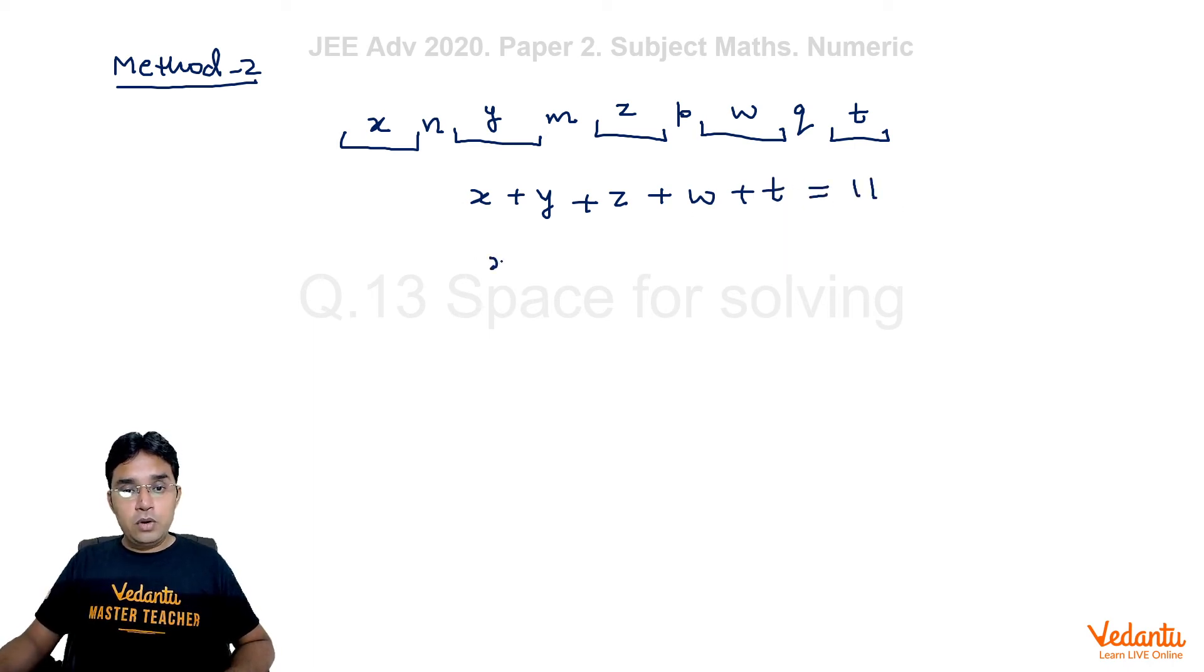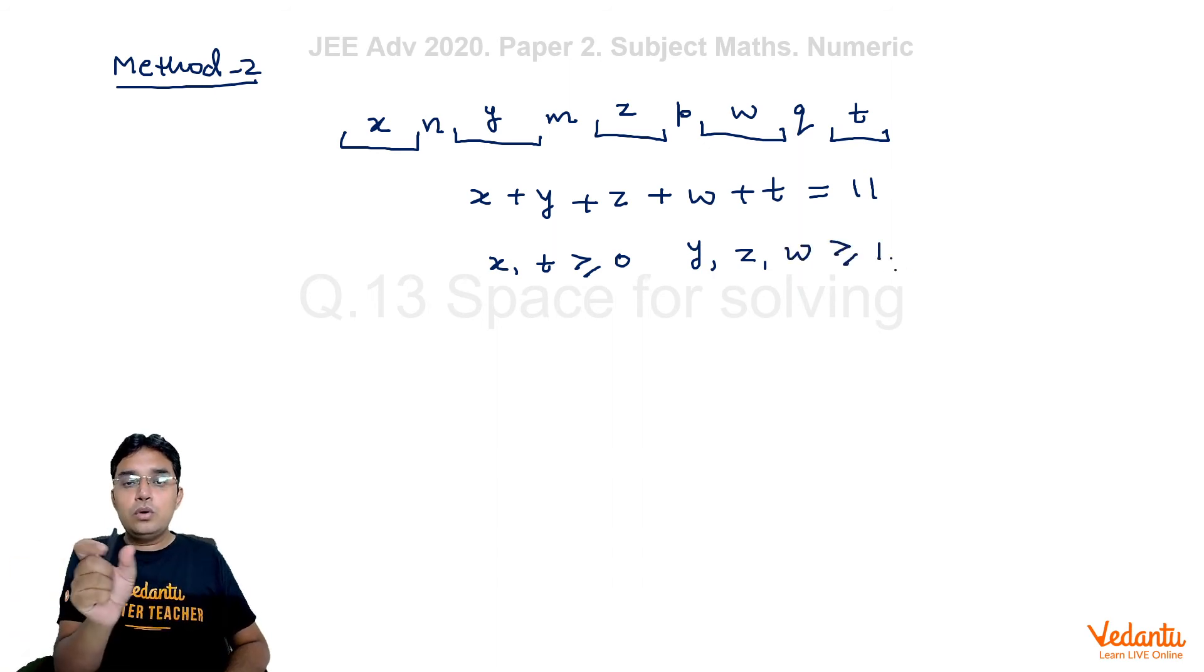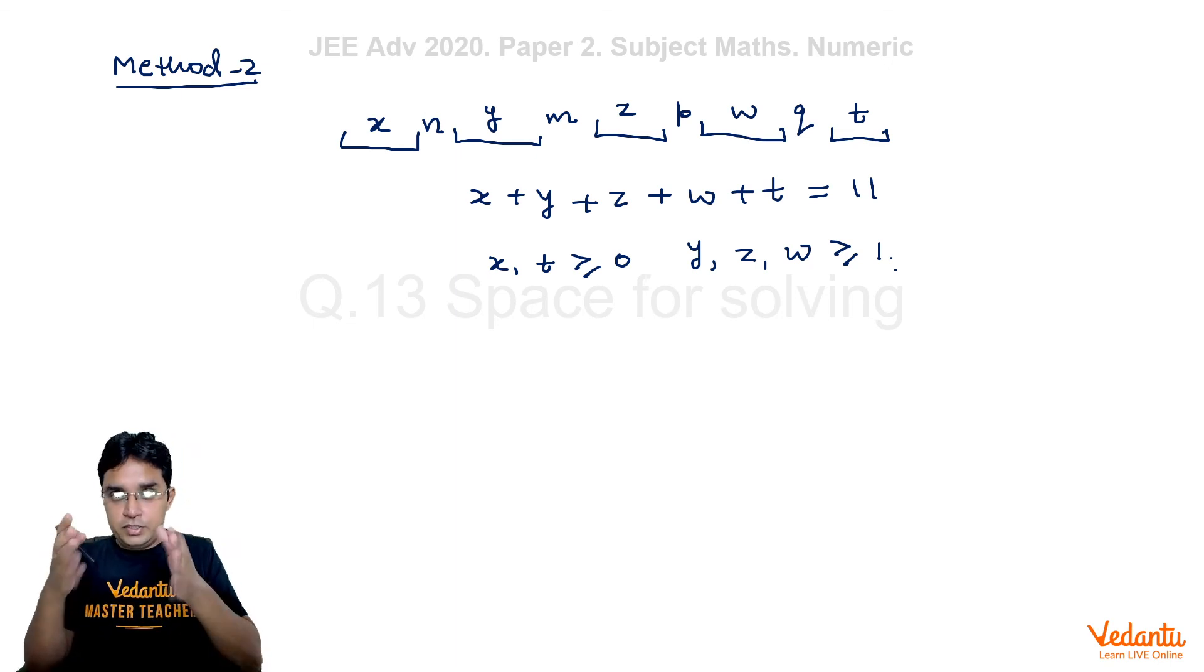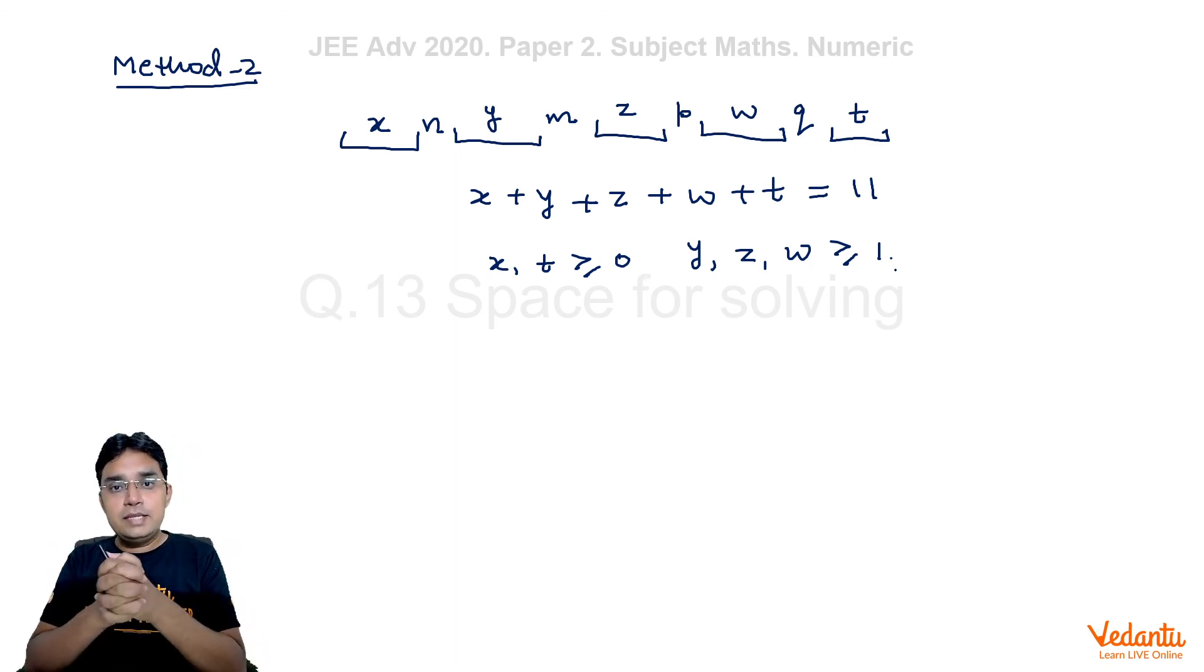Now, condition on X and T would be that they can be greater than or equal to 0 because you may make visit on very first day also. You may make visit on the last day also. In that case, X and T will become 0, 0. But your Y, Z, and W, they should be at least one, so that no two days on which visit has been made are consecutive.